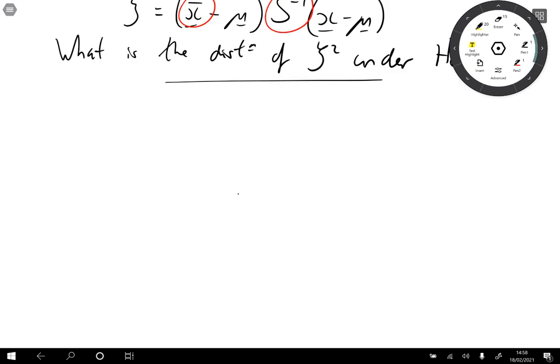So this video is about the Wishart distribution. And the Wishart distribution tells us the distribution of the sample covariance matrices.